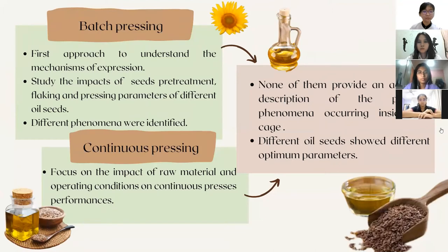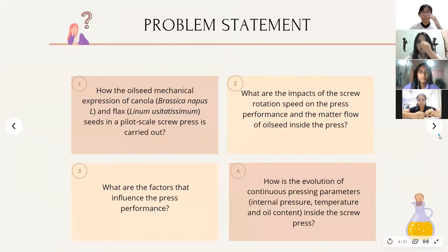However, from both batch and continuous pressing, the precise understanding of the physical phenomena inside the cage was unachievable. Studies on various species indicated that optimum parameters for mechanical expression are based on the properties of the seeds. The performance of continuous expression is hard to determine based on a theoretical approach since the mechanism of this dynamic process is varied and complex. The screw presses are still viewed as black boxes and their operations are difficult to control.